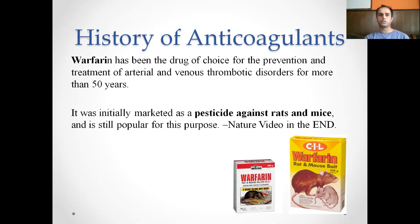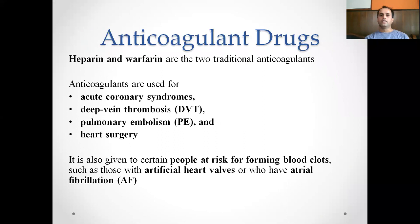Warfarin has been the drug of choice for prevention and treatment of arterial and venous thromboembolic disorders for more than 50 years. It was initially marketed as a pesticide against rats and mice. Heparin and warfarin are the two traditional anticoagulant drugs, used for various acute coronary syndromes, deep vein thrombosis, pulmonary embolism, and heart surgery. They can also be given prophylactically to people with artificial heart valves or atrial fibrillation.